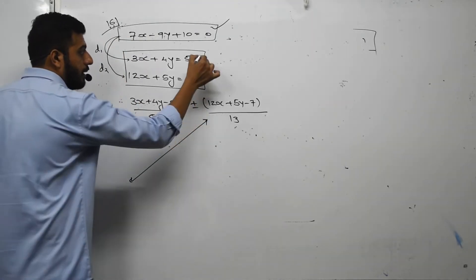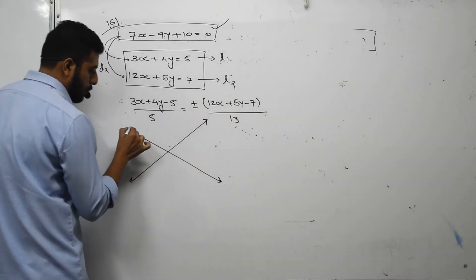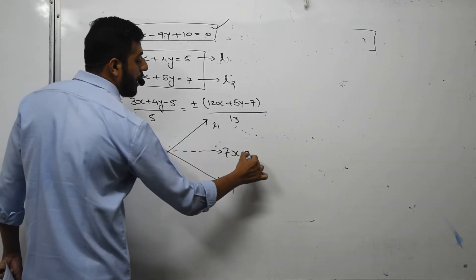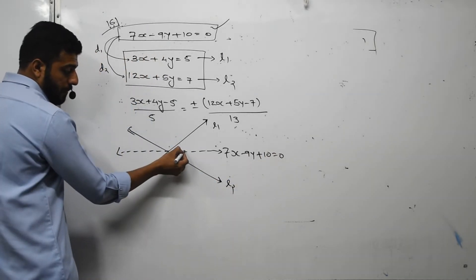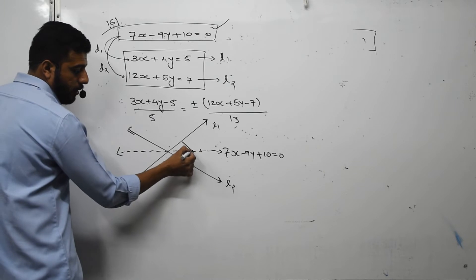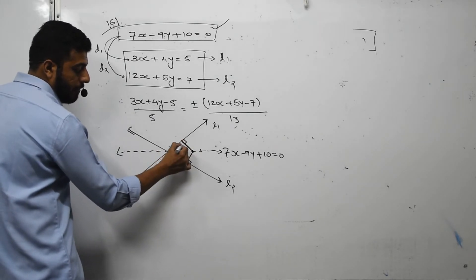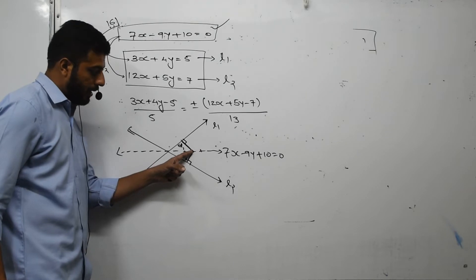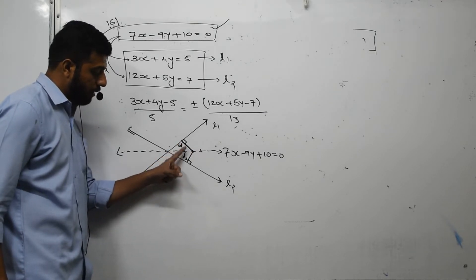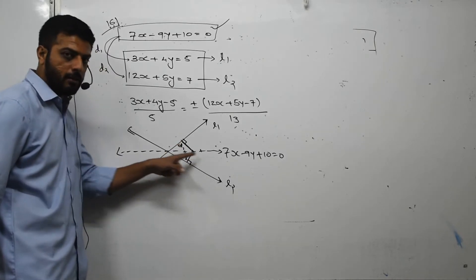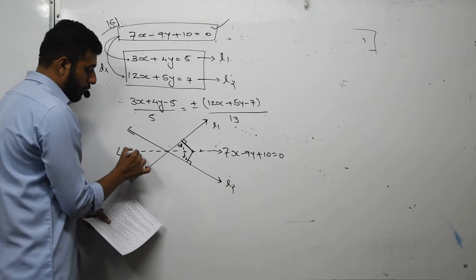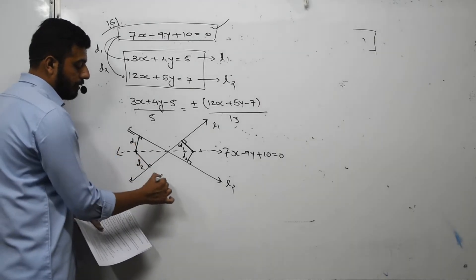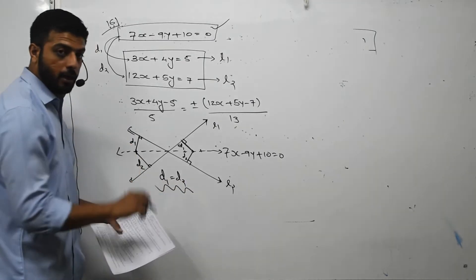So the given line is a bisector of L1 and L2. From any point on the bisector, the perpendicular distances to both lines are always equal — that is the definition of a bisector. Therefore, from any point on this line drawing perpendicular segments to the two lines, D1 equals D2. The relation is D1 equals D2.